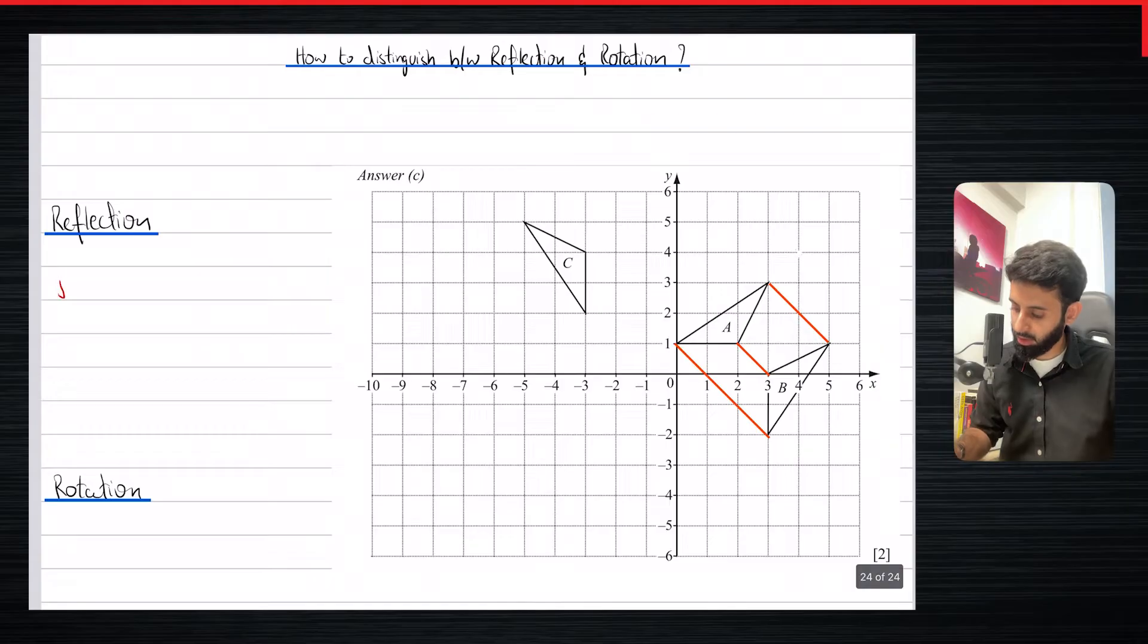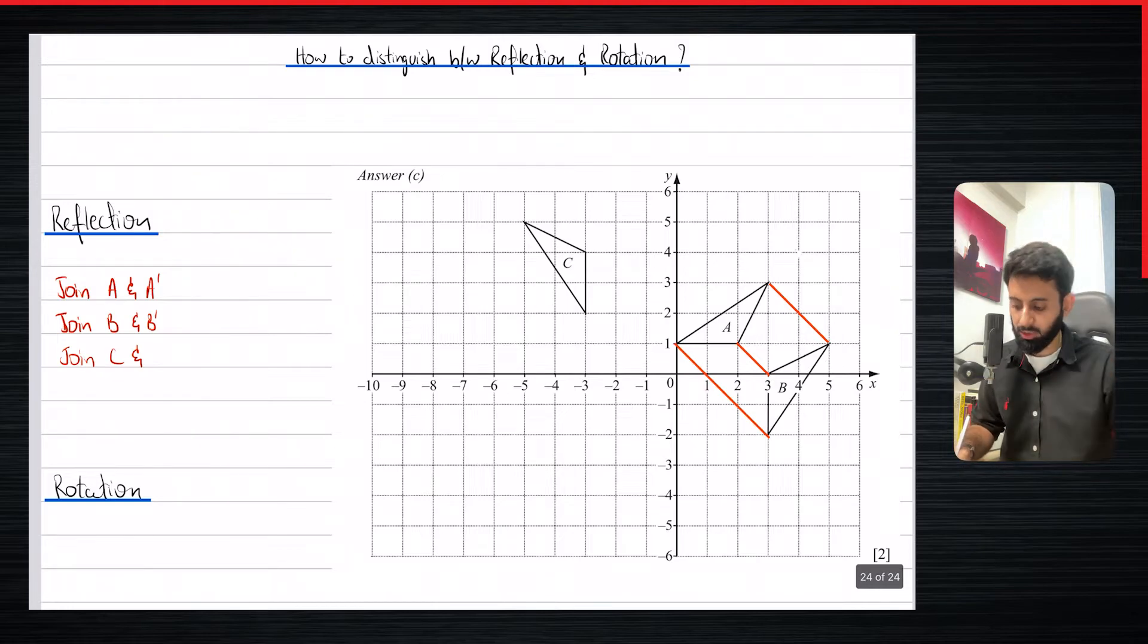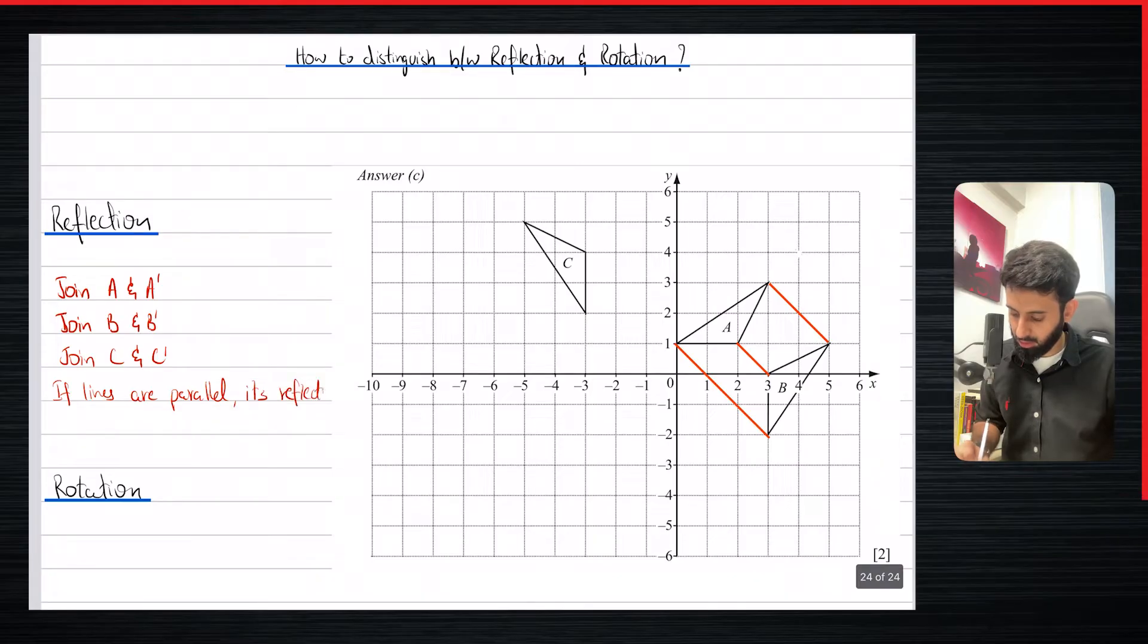So let's write that down over here. You join A and A prime, and then you join B and B prime, and C and C prime. Although by the time you join the two points, objects with their respective images, you will have an idea. But just for the sake of going with the flow, let's say you join C and C prime. If lines are parallel, it's a reflection.